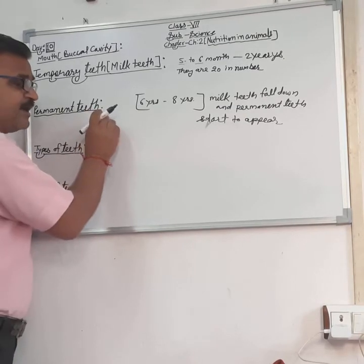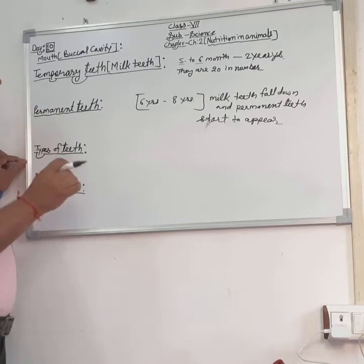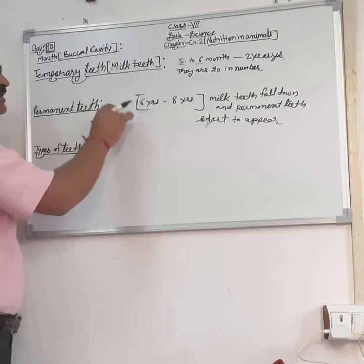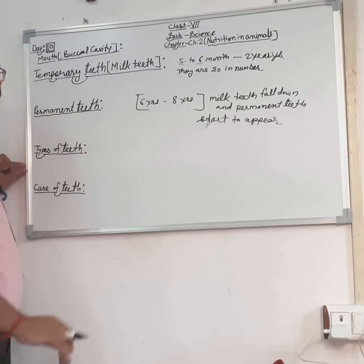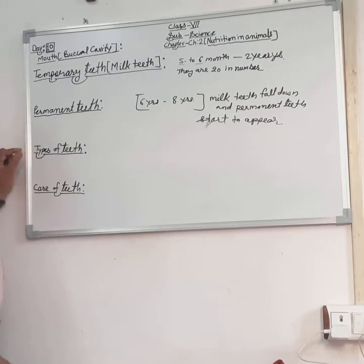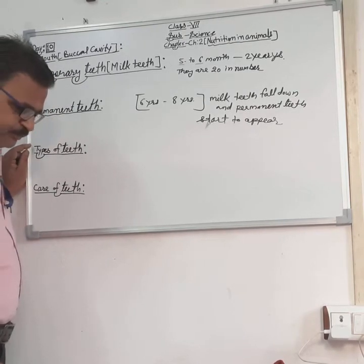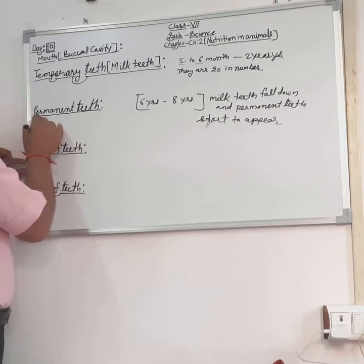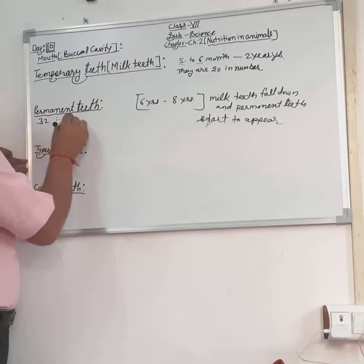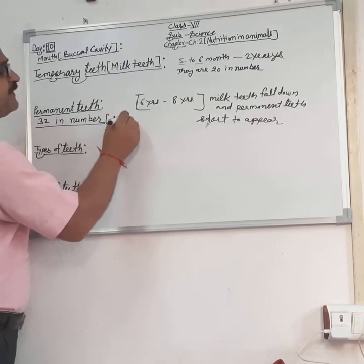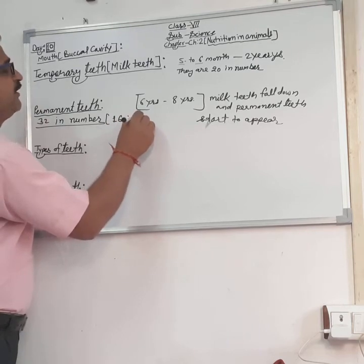The milk teeth fall off one by one, and the new teeth that appear and remain for the whole life are called permanent teeth. As each milk tooth falls, a permanent tooth appears in its place. This timing is naturally fixed and can vary in every human being — it doesn't happen all at once. Permanent teeth are 32 in number, with 16 in the upper jaw and 16 in the lower jaw — 16 in each jaw.